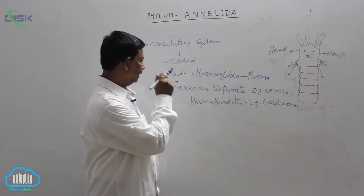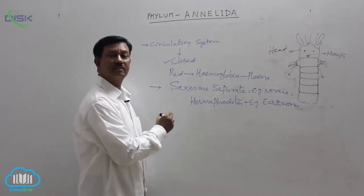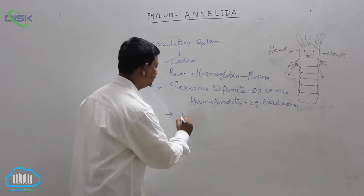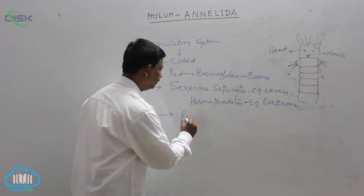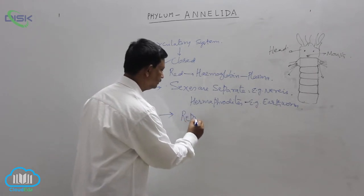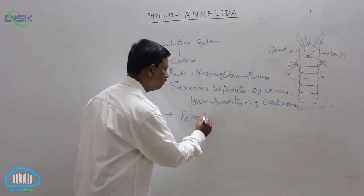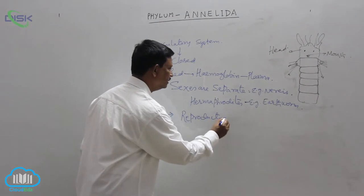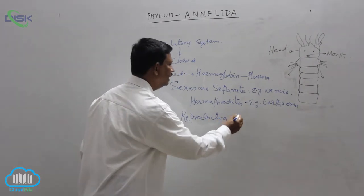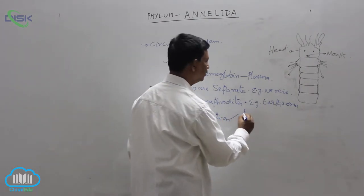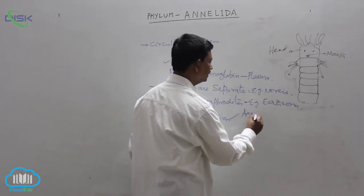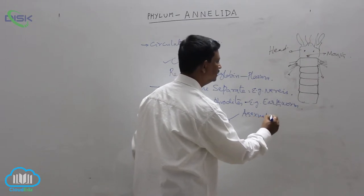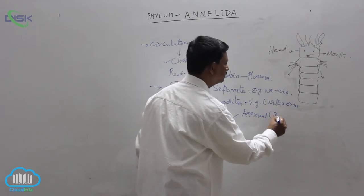Reproduction. Reproduction mainly takes place by sexual means. Production of new individuals is known as reproduction. Asexual type of reproduction is also present in some animals — that is budding.